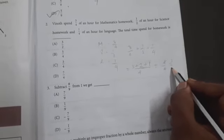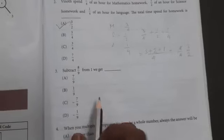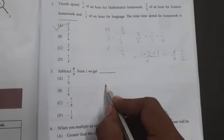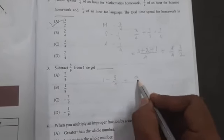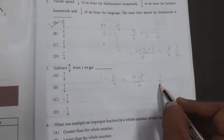Next question number three: Subtract eight by nine from one, we get. So we have one minus eight by nine. LCM is nine, so nine minus eight divided by nine equals one by nine. Option B is the correct answer.